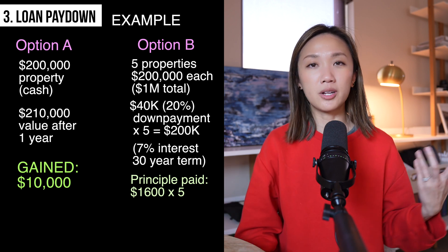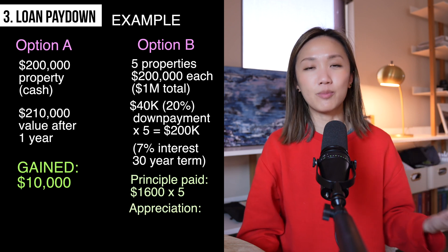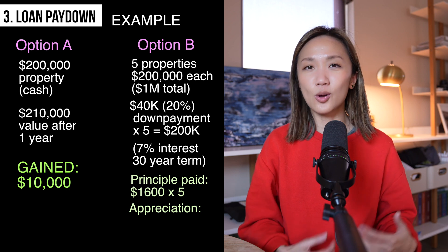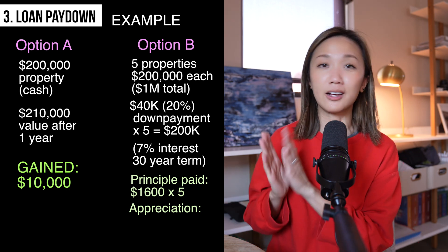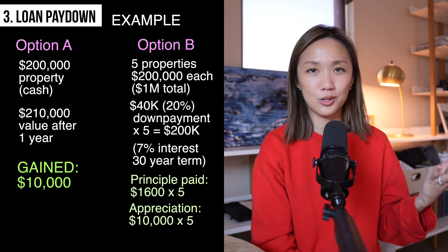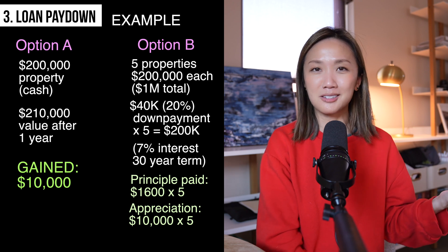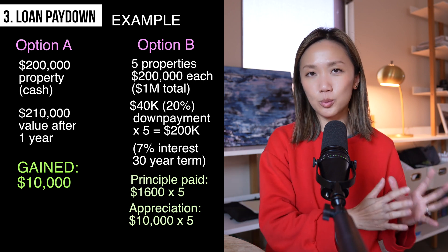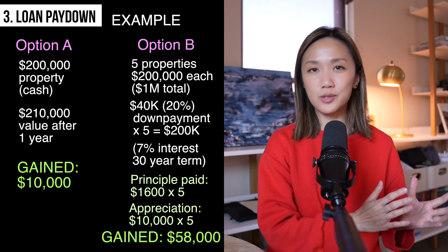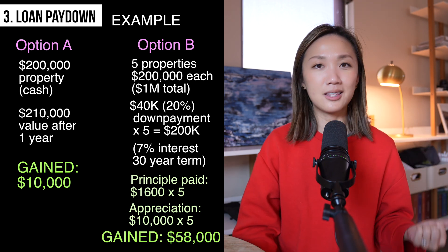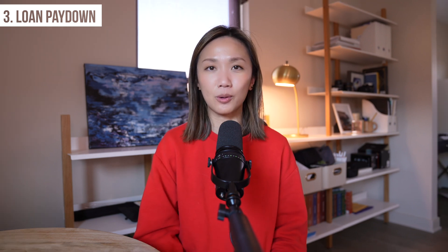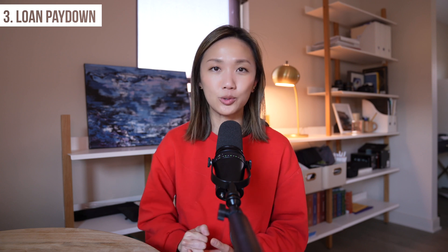Additionally, each of these properties is also increasing in value by 5%, just like in the first option. So instead of $10,000 in equity gain due to appreciation like that first scenario, now you have $50,000 gained in equity because you have five properties. Combining both the appreciation and the loan pay down, in Option B you are up $58,000 even though you invested the same amount and market conditions are the same — only because you used leverage to access either a bigger property or more properties. Obviously, the trade-off is that leverage comes with risk. Everything in investing is risk versus reward, and this is a great example of why people find leverage to be such a powerful tool.